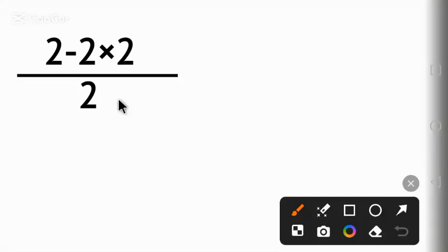Hello everyone, in this video I will find the value of this expression: 2 minus 2 times 2 all over 2. Can you solve it? Put the correct answer in the comments. Let's solve it together.